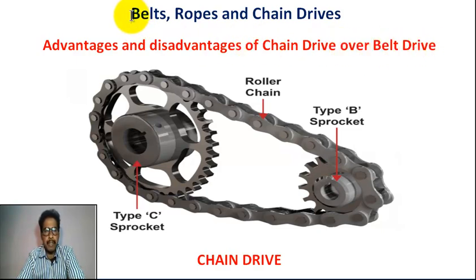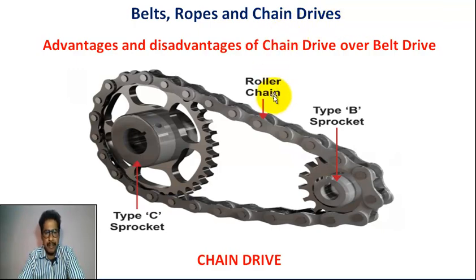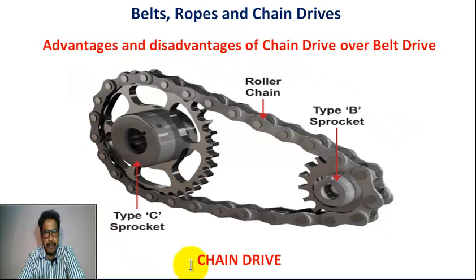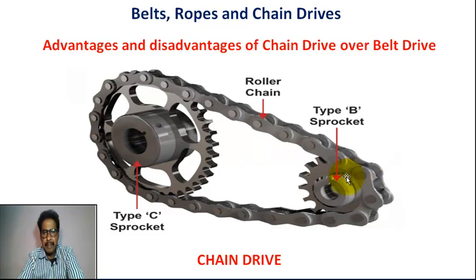Chapter name: Belts, Ropes and Chain Drives under Theory of Machines. This is the picture of chain drive — this is roller chain, this is the type C sprocket, this is the type B sprocket.